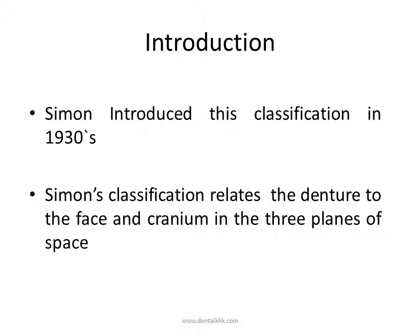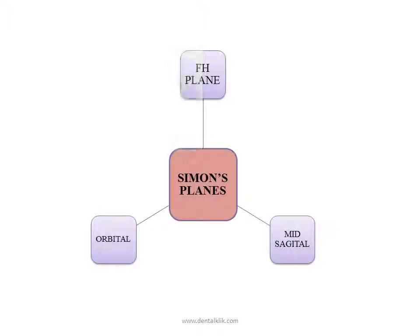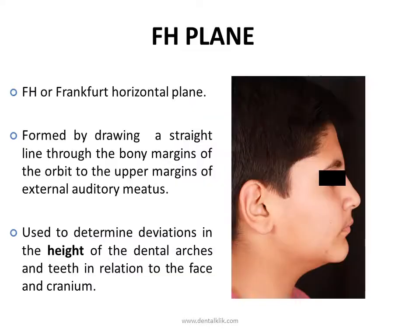Since the growth of the face and jaws occur in three planes of space — that is height, width, and depth — abnormalities can also occur in any one or more of these planes. Simon's classification relates the denture to the face and cranium in these three planes of space: the Frankfurt horizontal plane, the orbital plane, and the mid-sagittal plane.